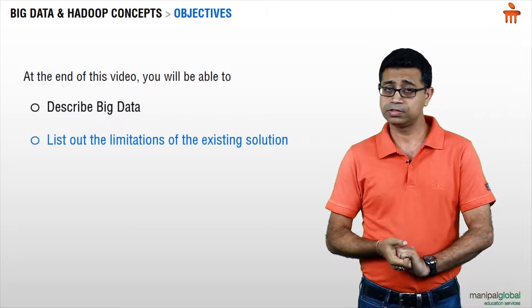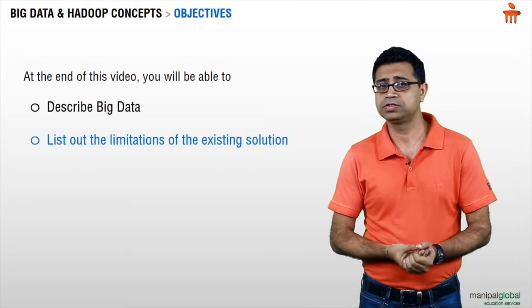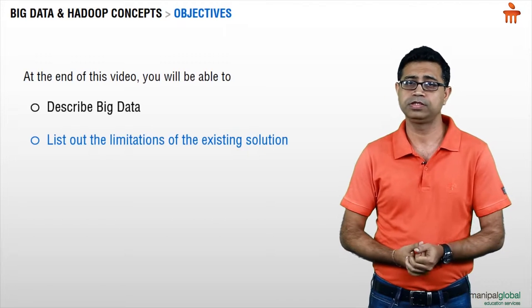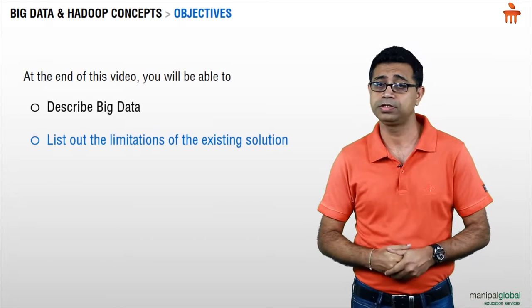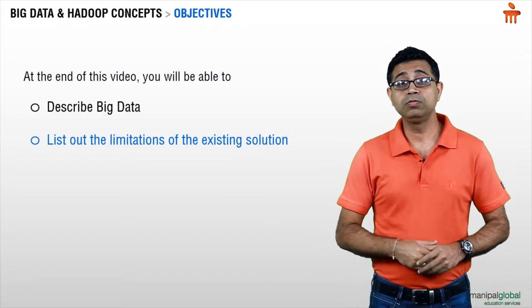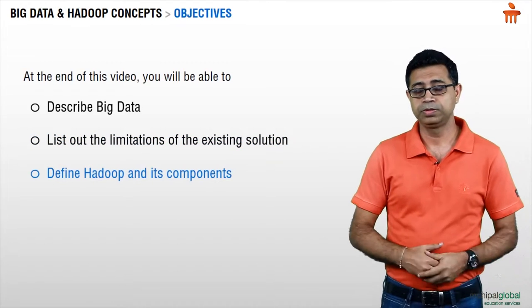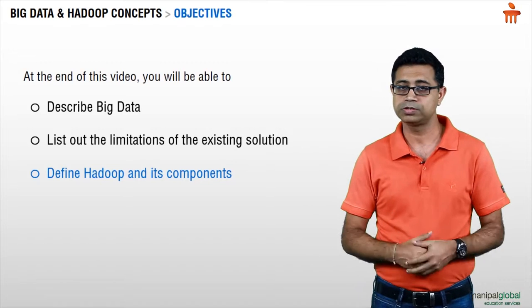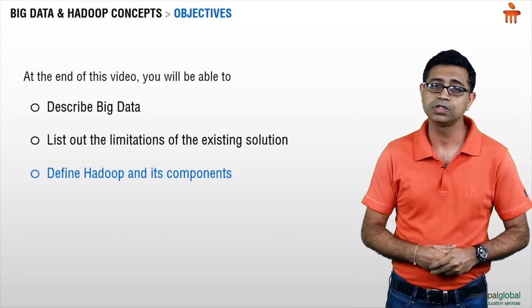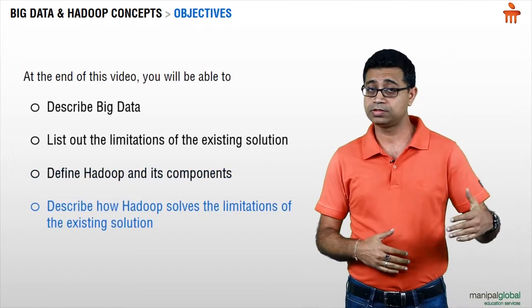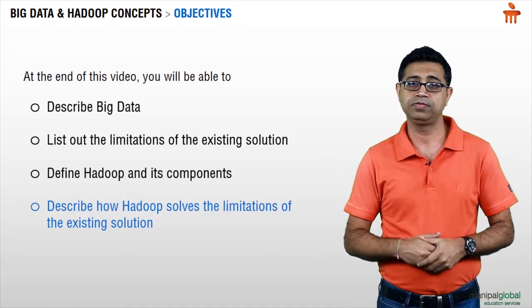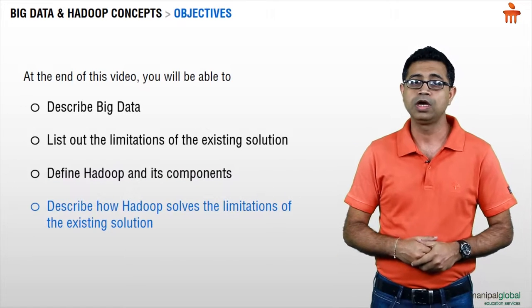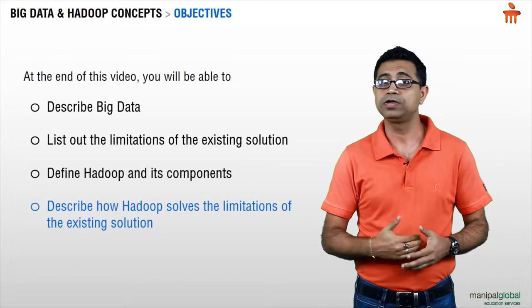What we are going to understand now is: what is big data? We are going to list out the limitations of the existing solutions — we already have DBMS and data warehousing — and we're going to understand the limitations of those. We'll then define Hadoop, its basic constituents, components, and its ecosystem. We'll also see how Hadoop helps you overcome the challenges of the existing solutions.